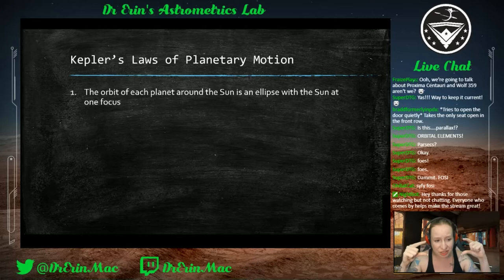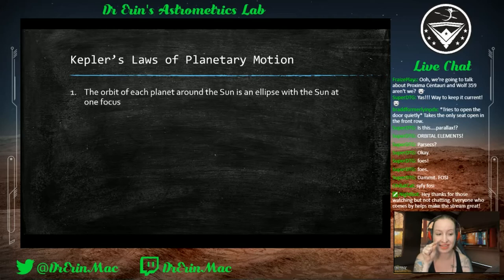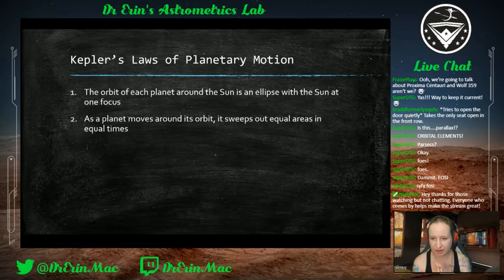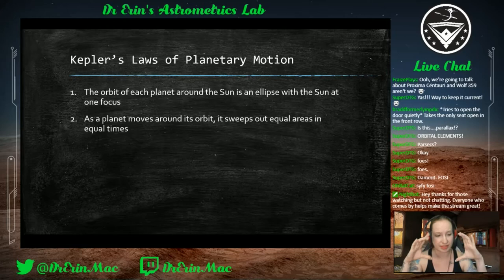The orbit isn't as elliptical as exaggerated diagrams suggest — the two focus points are pretty close together in reality. The planet at its closest point to the sun is called the perihelion; at its furthest point it's the aphelion. The sun sits at one focus. The example shown is highly elliptical just to drive home the geometry — real planetary orbits are much closer to circular.